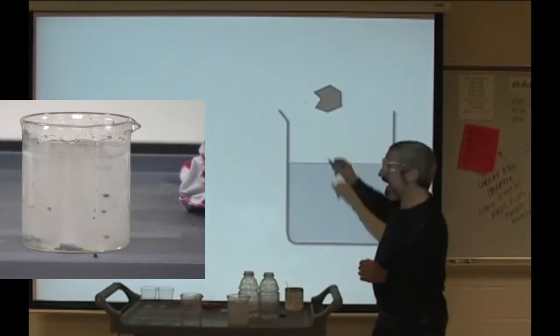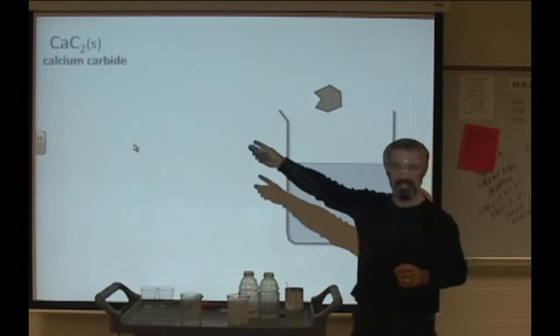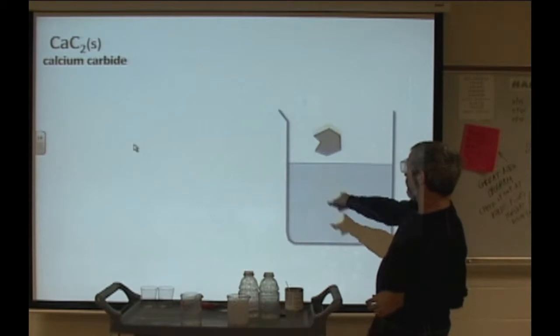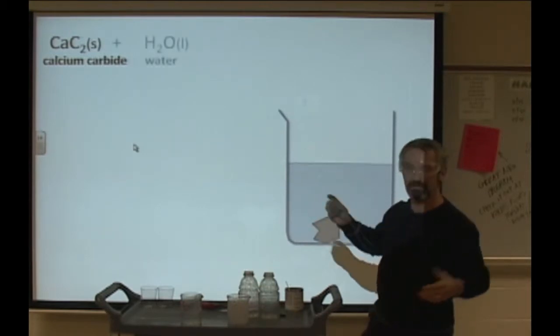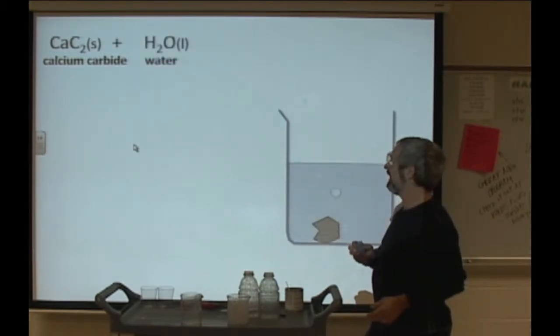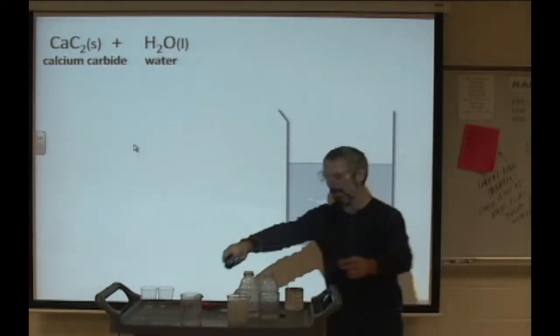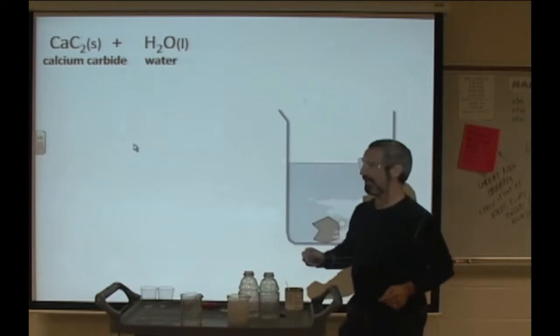Well, we have a chunk of calcium carbide and calcium carbide's formula, CaC2, it's a solid. We dropped it in the water, you know, water, H2O, liquid. And we got these bubbles and a milky white precipitant. Notice how it turned very cloudy in there.